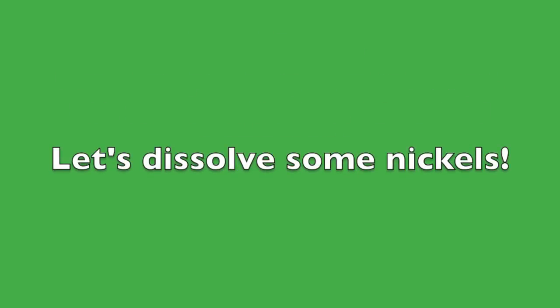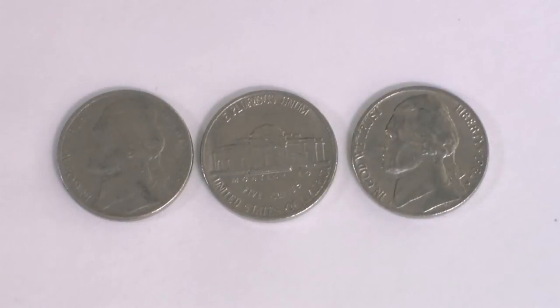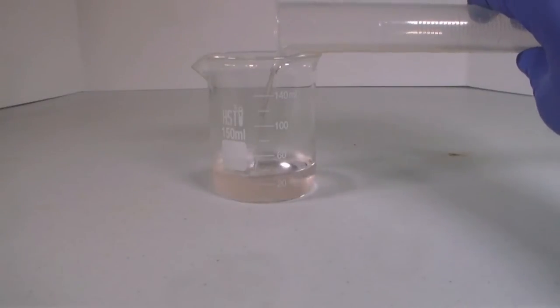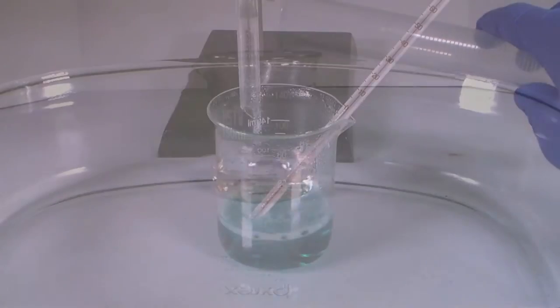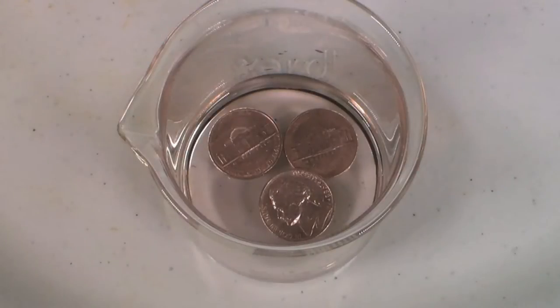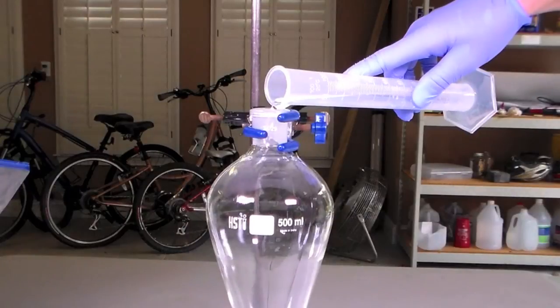With the disclaimer out of the way, we can move on to the actual experiment. US nickels consist of 75% copper and 25% nickel by mass. We will be dissolving them in sulfuric acid to make a mixture of copper-2 sulfate and nickel-2 sulfate.